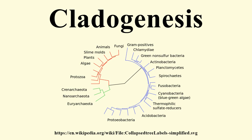Simulations: This involves taking already known information about a species and running it through a computer to see if a cladogenetic event is the most probable explanation for a species' existence. This way of studying species is the most practical, as case studies and constructing experiments can cost a lot of money and take time. It is easier to plug information into a computer and allow it to run different scenarios to test for accuracy.